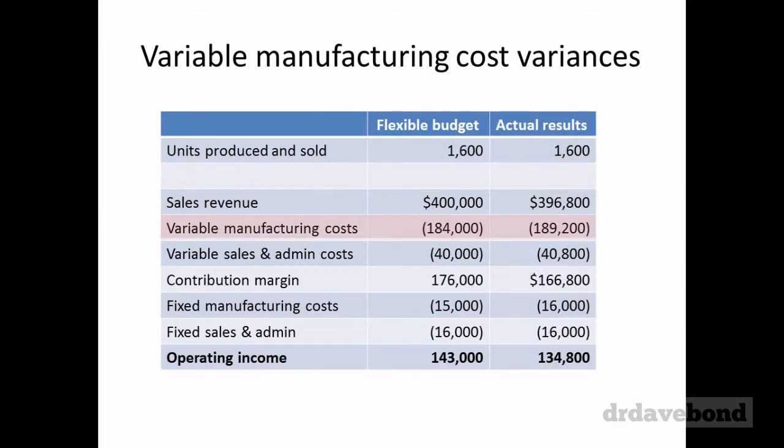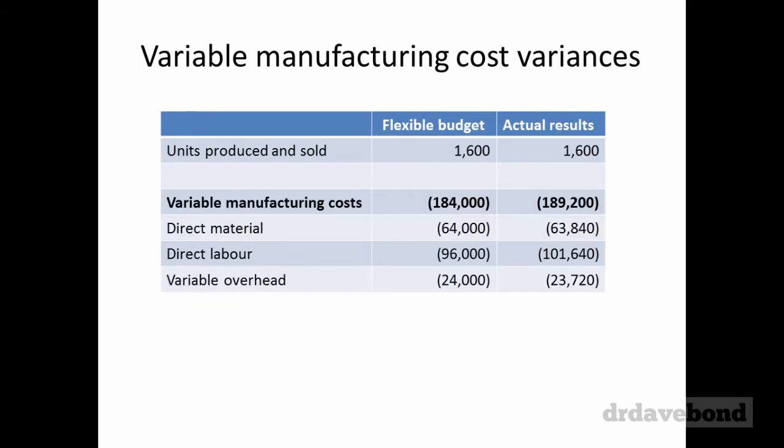Taking the flexible budget and actual results, we're going to focus on the variable manufacturing costs, which have an unfavorable variance of $5,200. That variable manufacturing cost breaks down into material, labor, and the variable overhead component. The flexible budget amounts were $64,000 for materials, $96,000 for labor, and $24,000 for overhead. Actual results were $63,840 for material, $101,640 for labor, and $23,720 for variable overhead. Importantly, the number of units produced and sold in both cases are the same — the actual quantity of output is the same.